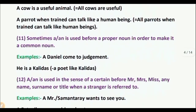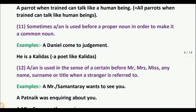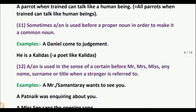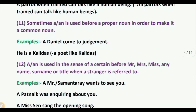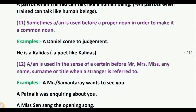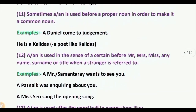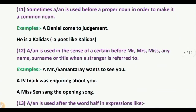Rule 12: A or AN is used in the sense of 'a certain' before Mr., Mrs., Miss or any name, surname, or title when a stranger is referred to. Examples: 'A Mr. Samantara wants to see you.' 'A Patanayak was inquiring about you.' 'A Miss sang the opening song.' Here, A is used before Patanayak and Samantara.